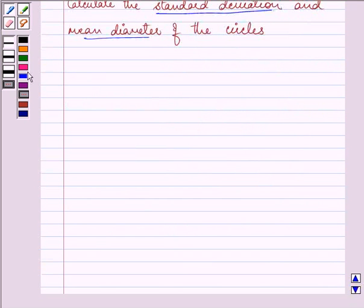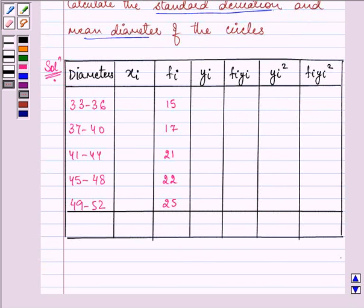So for this, let us draw a table. Now, we need to find out xi, which is lower limit plus upper limit upon 2.